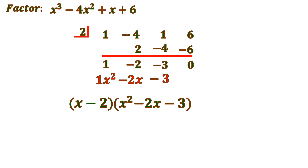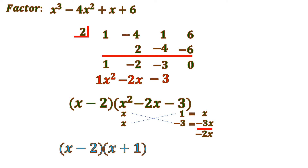The quotient x squared minus 2x minus 3 is still factorable. Factoring x squared gives x times x. For negative 3, we use 1 and negative 3. Cross-multiplying: 1 times x is x, and x times negative 3 is negative 3x. Combining x and negative 3x gives negative 2x, matching the middle term. So the complete factored form of x cubed minus 4x squared plus x plus 6 is x minus 2, times x plus 1, times x minus 3.